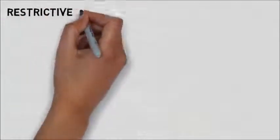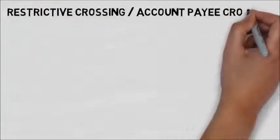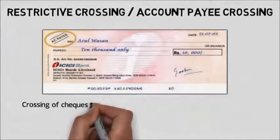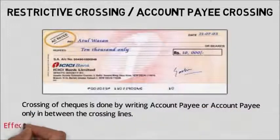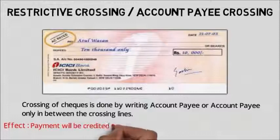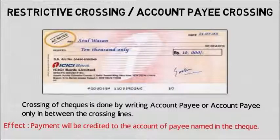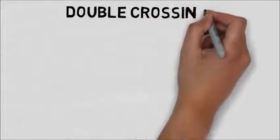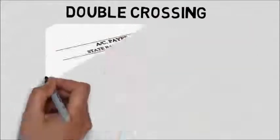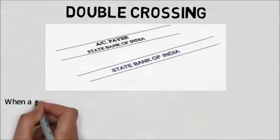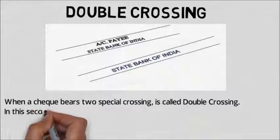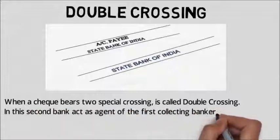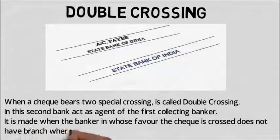In restrictive crossing, also called account payee crossing, the crossing is done by writing 'account payee' or 'account payee only' between the crossing lines, and the payment will be credited to the account of the payee named in the check. When a check bears two special crossings, it is called double crossing. In this case, the second bank acts as an agent of the first collecting banker, and it is made when the banker in whose favour the check is crossed does not have a branch where the check is to be paid.